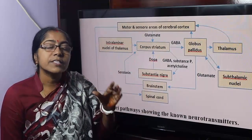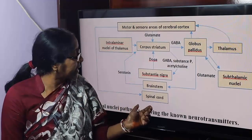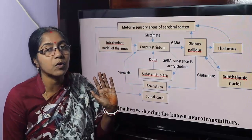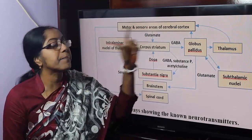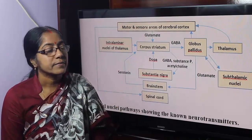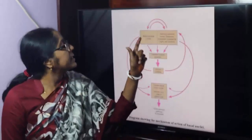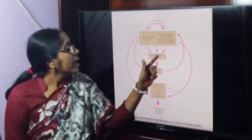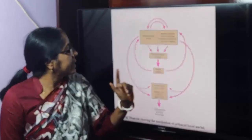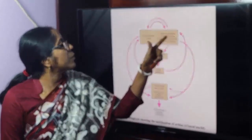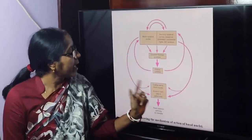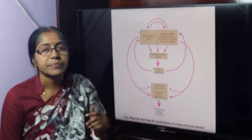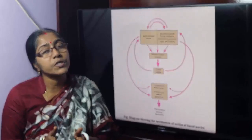The basal nuclei control posture and voluntary movements, but they are not directly connected to the spinal cord. They control posture and voluntary movements via the cerebral cortex — specifically the motor cortex, sensory cortex, thalamus, brainstem (that is, substantia nigra and red nucleus). The output goes to the motor cortex and sensory cortex, then to cranial nerve motor nuclei, anterior horn cells, and spinal cord. This is the final common pathway for muscle control.